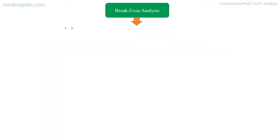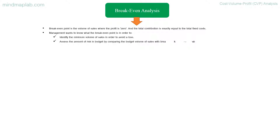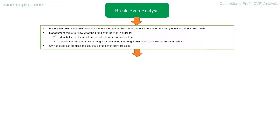Break-even analysis: the break-even point is the volume of sales where profit is zero and the total contribution is exactly equal to the total fixed costs. Management wants to know the break-even point in order to identify the minimum volume of sales needed to avoid a loss, and to assess the amount of risk in a budget by comparing the budgeted volume of sales with the break-even volume.